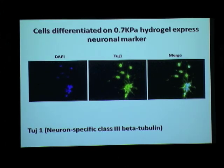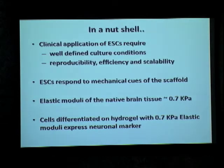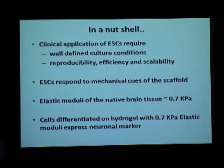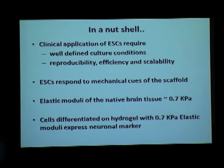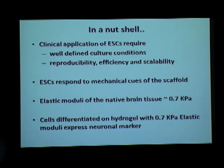This was very interesting, but of course we need to do a lot more functional assays and other quantification methods to confirm this. If improved and made more efficient, it can have a lot of impact in regenerative medicine. To summarize: we need proper well-defined conditions and efficient reproducible methods for clinical application of embryonic stem cells. We saw that embryonic stem cells respond to mechanical cues from the scaffold, different biological tissues have different elasticities, and cells differentiated on different elasticities show different behavior — in this particular case expressing the neuronal marker. That is what I have been doing all summer.